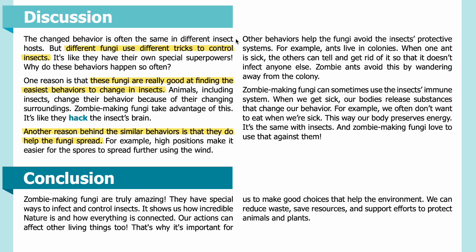The changed behavior is often the same in different insect hosts, but different fungi use different tricks to control insects — it's like they have their own special superpowers. Why do these behaviors happen so often? One reason is that these fungi are really good at finding the easiest behaviors to change in insects. Animals, including insects, change their behavior because of their changing surroundings, and zombie-making fungi take advantage of this — it's like they hack the insect's brain. Another reason is that these behaviors help the fungi spread: high positions make it easier for spores to spread in the wind. Other behaviors help the fungi avoid the insects' protective systems — for example, ants live in colonies, and when one is sick, the others can tell and get rid of it. Zombie ants avoid this by wandering away from the colony.